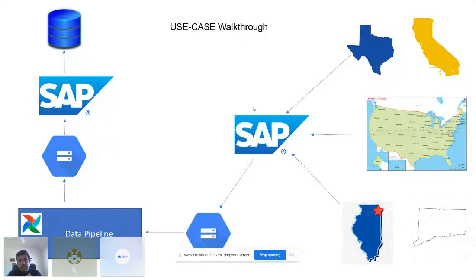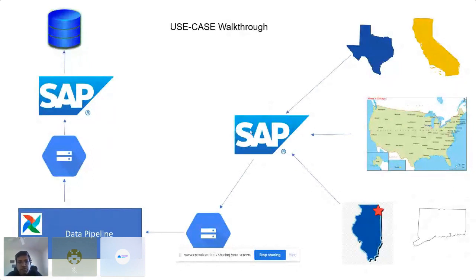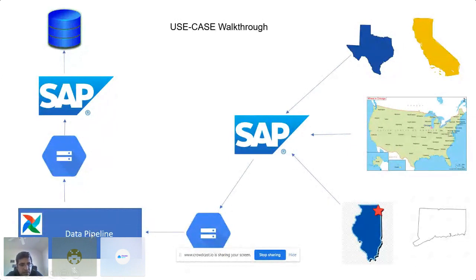That information was given to us via the SAP system, because their database was not exposed to us. What the SAP system does is it collects their data and gives us a flat file in the form of an Excel sheet to a GCP bucket. From there, our pipeline basically starts, and after further processing, it generates another set of CSVs for our system to import the data.